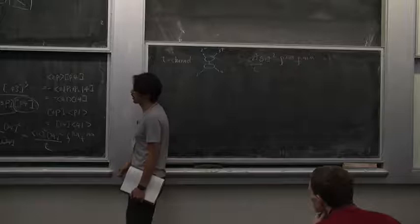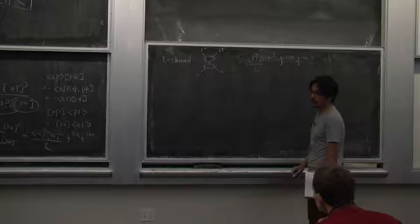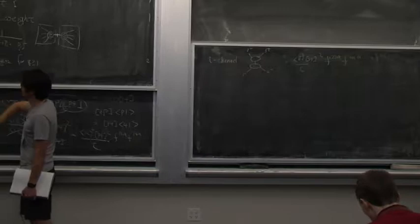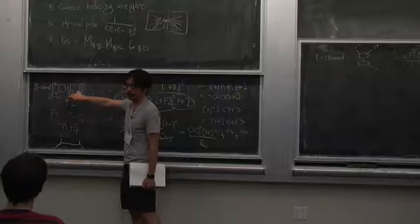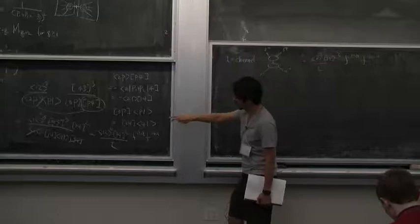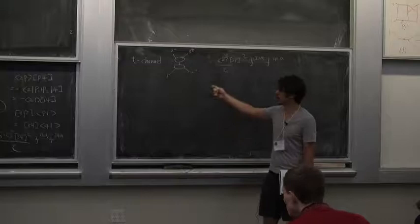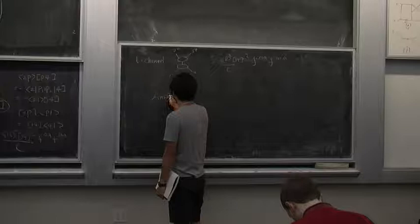Let's write down an ansatz that factorizes correctly and gives these residues. The conditions are: correct helicity weight, and correct physical poles that allow factorization with the correct residues. Looking at the residues, ⟨1,2⟩ angle and [3,4] square appear overall — which makes sense because they carry the required little group indices, with 1,2 being minus helicity and 3,4 being plus. So the ansatz will be ⟨1,2⟩² [3,4]² times some function.